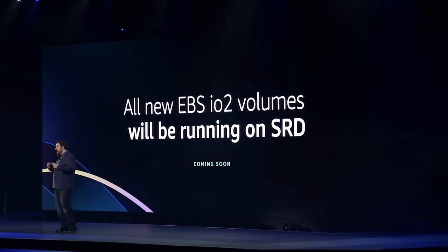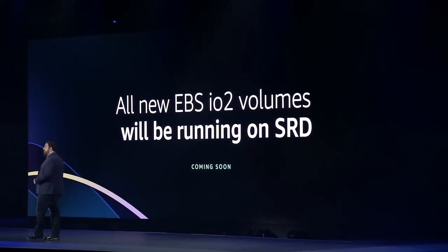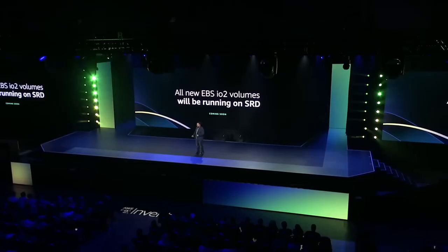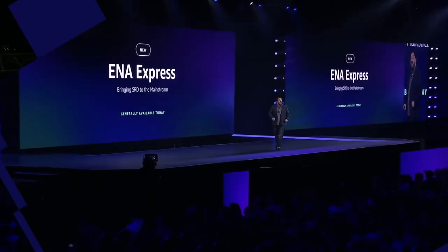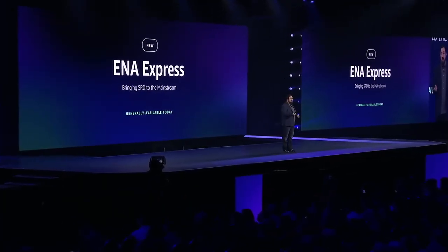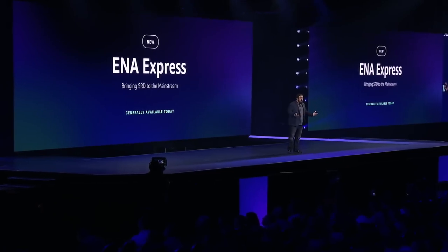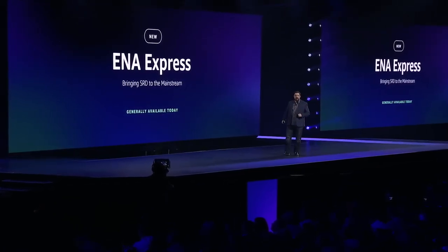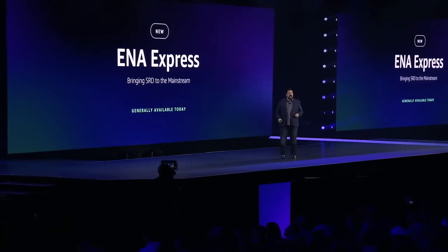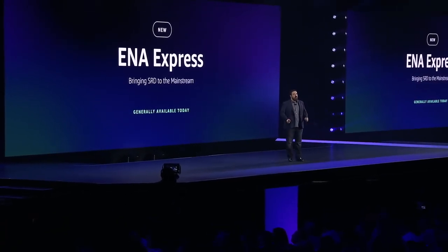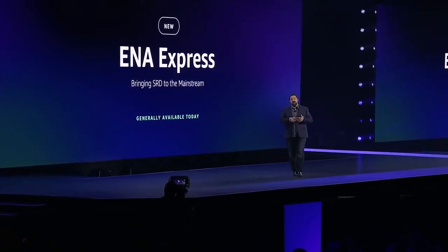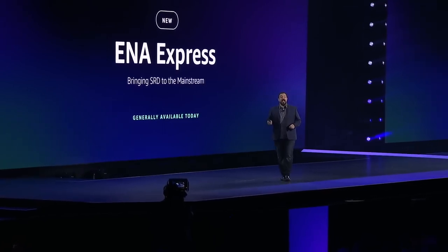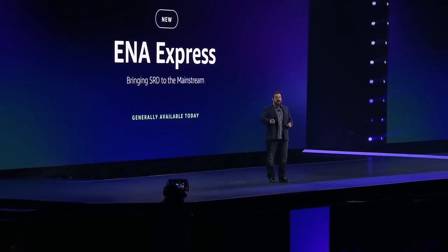Starting early next year, all new EBS-IO2 volumes will be running with SRD. ENA Express brings SRD technology mainstream by allowing you to apply it to any network interface. It's totally transparent to your application and works with normal OS network protocols like TCP and UDP. You simply enable ENA Express on your ENA interface and start getting the benefits of lower latency and higher throughput.